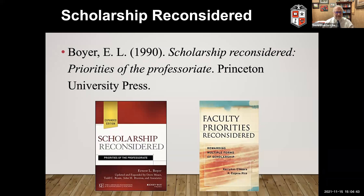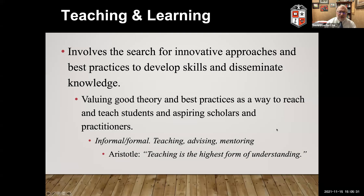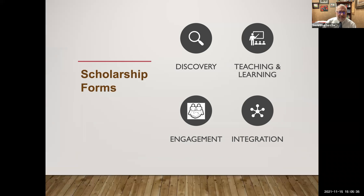Where I start from is with Boyer's report from 1990. If you haven't had this in one of your courses, this was a report he authored called Scholarship Reconsidered: Priorities for the Professoriate. There have been a few books since then. The Scholarship Reconsidered is probably the better of the two when it comes to understanding the areas and how they unfold, while the second one gets into how universities are starting to consider these four areas more as equal.